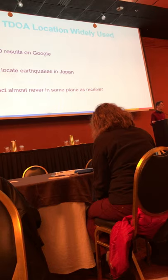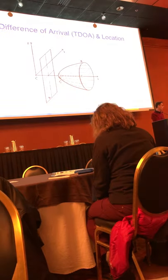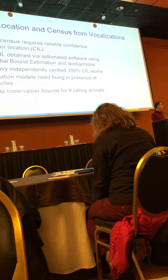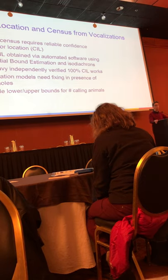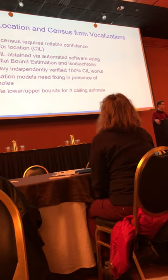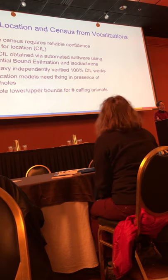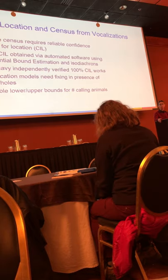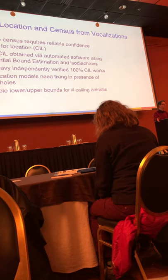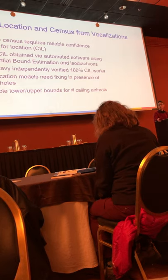It's true almost in all cases, but not always, that the object you're trying to locate is not in the same plane as your receivers. If you plot a point where you think the sound came from, the probability that that point actually coincides with where the animal is is almost zero. What we want instead is a confidence interval that has a 100% probability of containing the animal — and that's what I have developed.